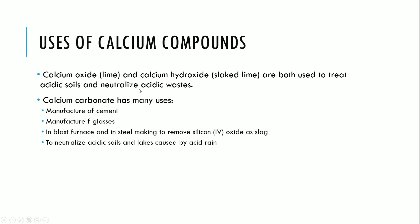The uses of calcium compounds: calcium oxide and calcium hydroxide are both used to treat acidic soils and neutralize acidic wastes because of their properties as bases. Calcium carbonate has various uses including the manufacture of cement and glass, in a blast furnace and steelmaking to remove silicon oxide as slag, and to neutralize acidic soils and lakes caused by acid rain.